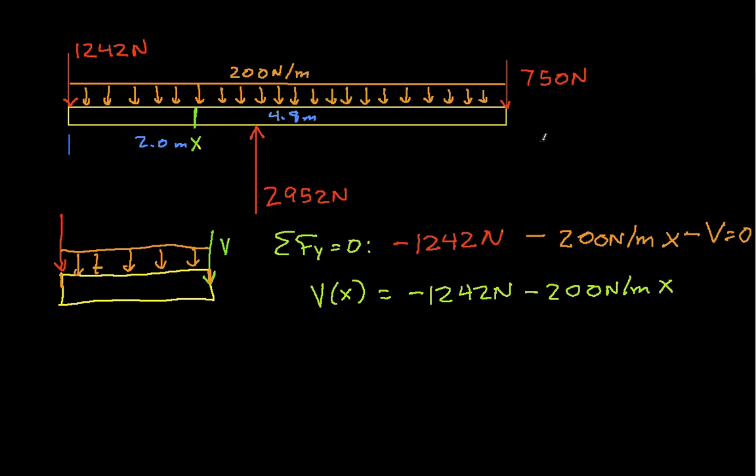And so, when we graph this, we'll graph it as a function of x. For x between 0 and 2, we have something that looks like this, where this is minus 1242, and this is sloping down at minus 200 newtons per meter. So, this will end up having a value out here of minus 1642. These are newtons.